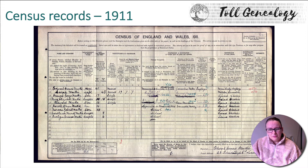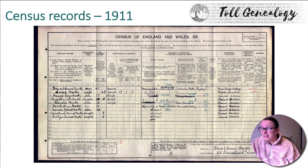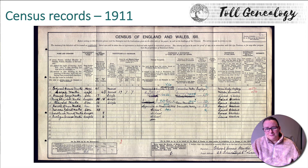The 1911 census will also tell you information about the property where they were living. Edward lives in a six-roomed house, which means he's doing pretty well for himself. If you look at 1911 census records for the rest of my family from Britain, there could be more children living in a two-roomed house. Edward was kind of the well-off one of my ancestors.